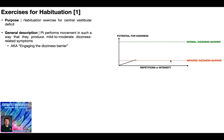For someone with an impaired dizziness barrier, a given intensity, duration, or number of repetitions is enough to cause dizziness, as represented by the black line crossing the impaired dizziness barrier. But for someone who's normal, it might be easy because we don't come anywhere close enough in repetitions, intensity, or duration to cause dizziness in a healthy person.